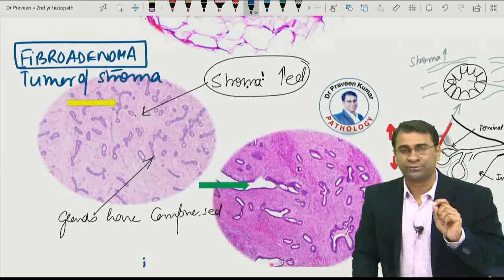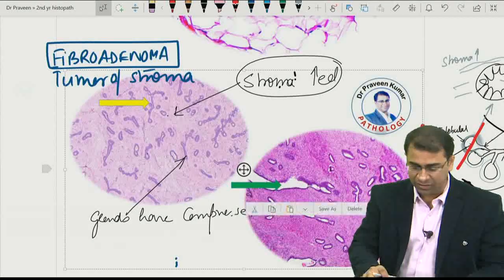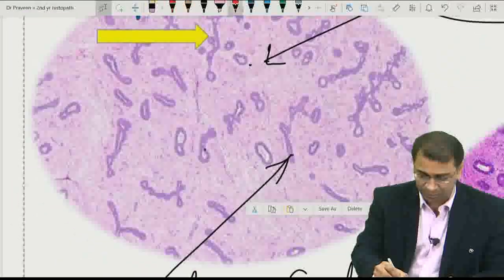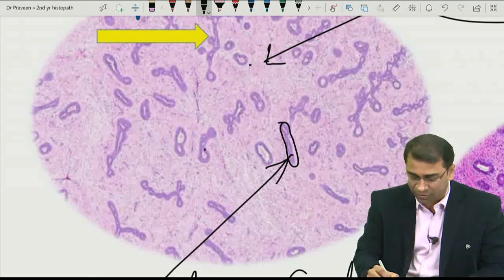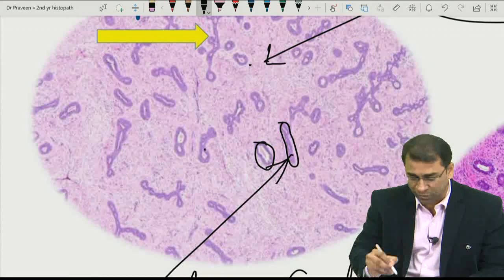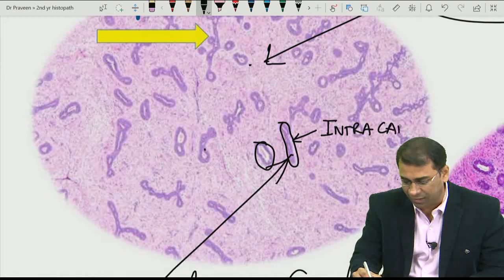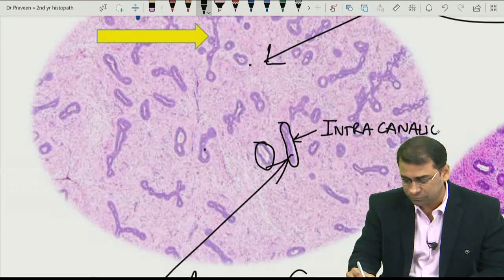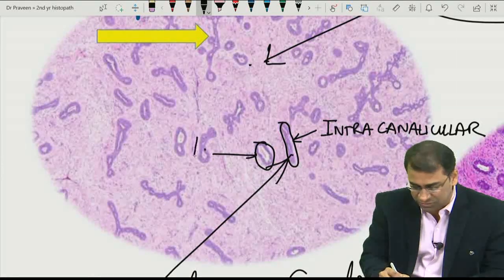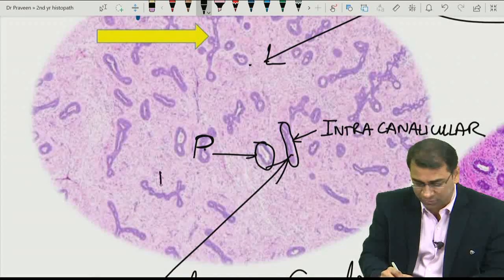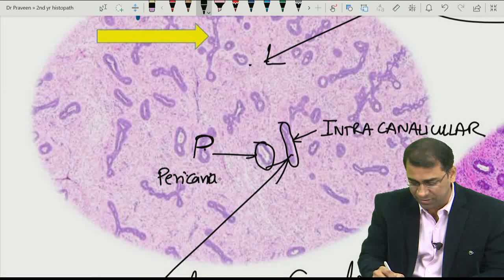Now, remember, the two types of ducts that you can see here. I will just label them. Look, one of the ducts have completely, look here, one of the ducts have become completely like a slit. Say, I will say this one, and one ducts are still round in shape. When you see this slit like glands, it is called as intracanalicular pattern. And when you look at this duct, look, this is still round, and hence, you call this pericanalicular.